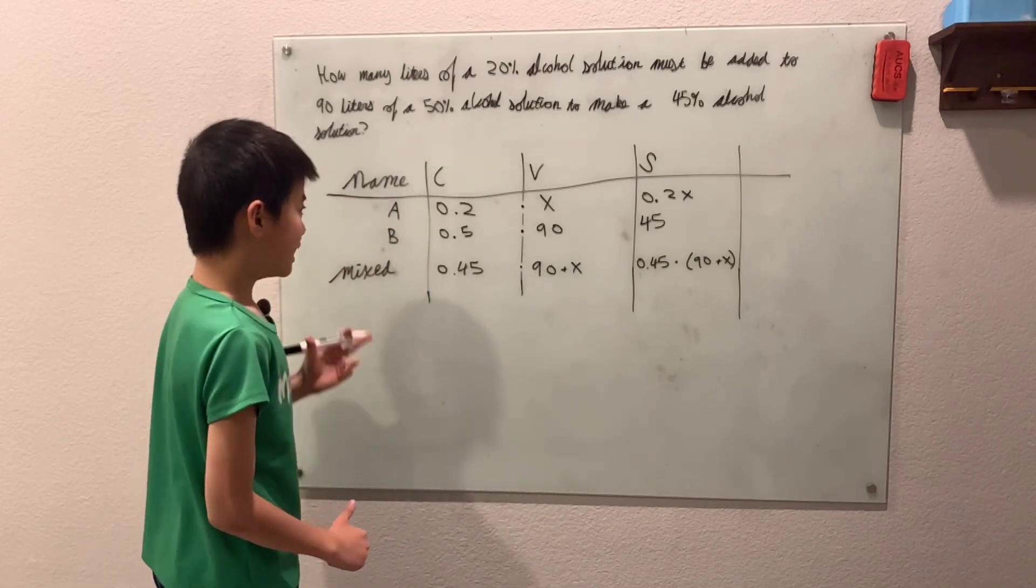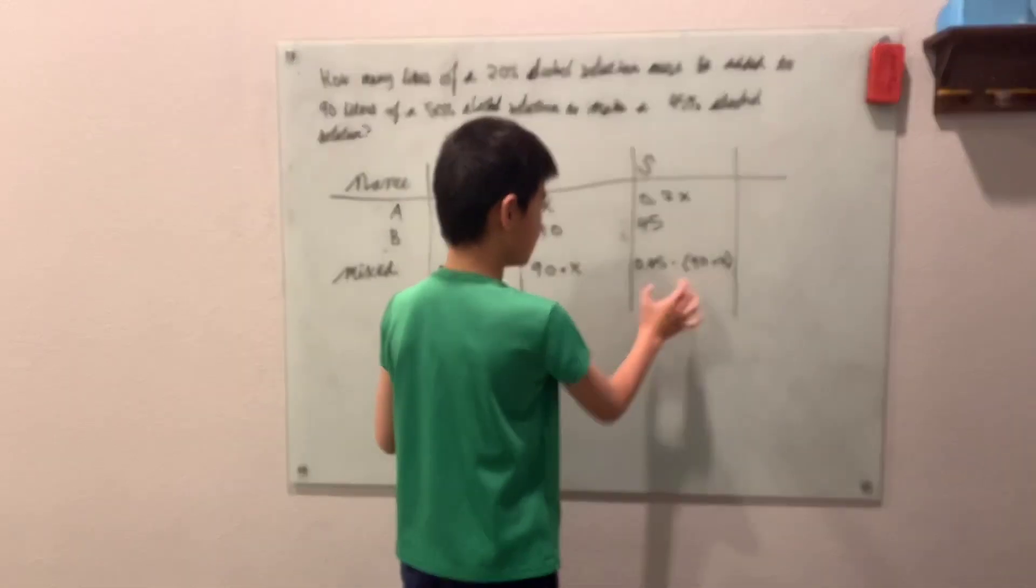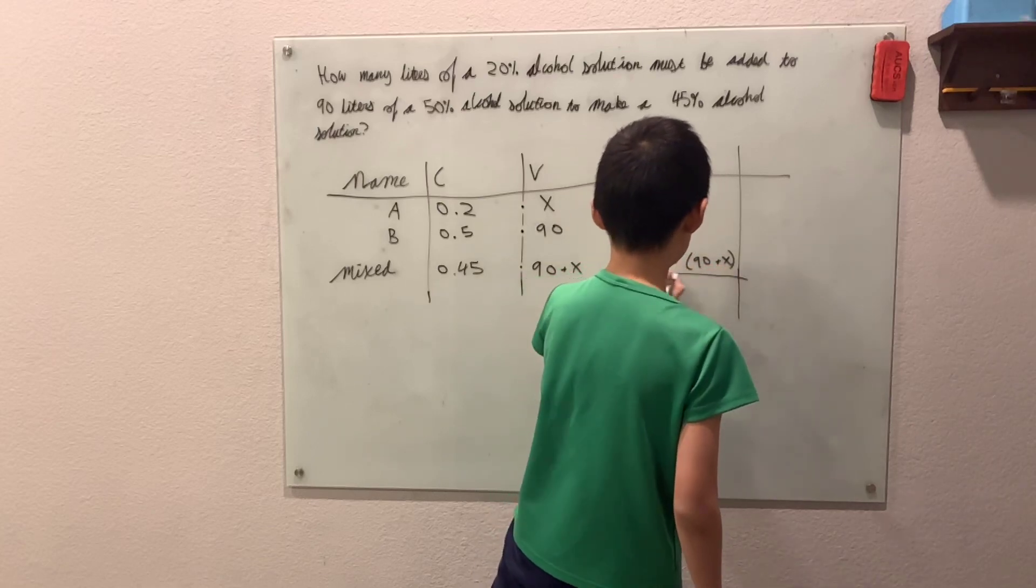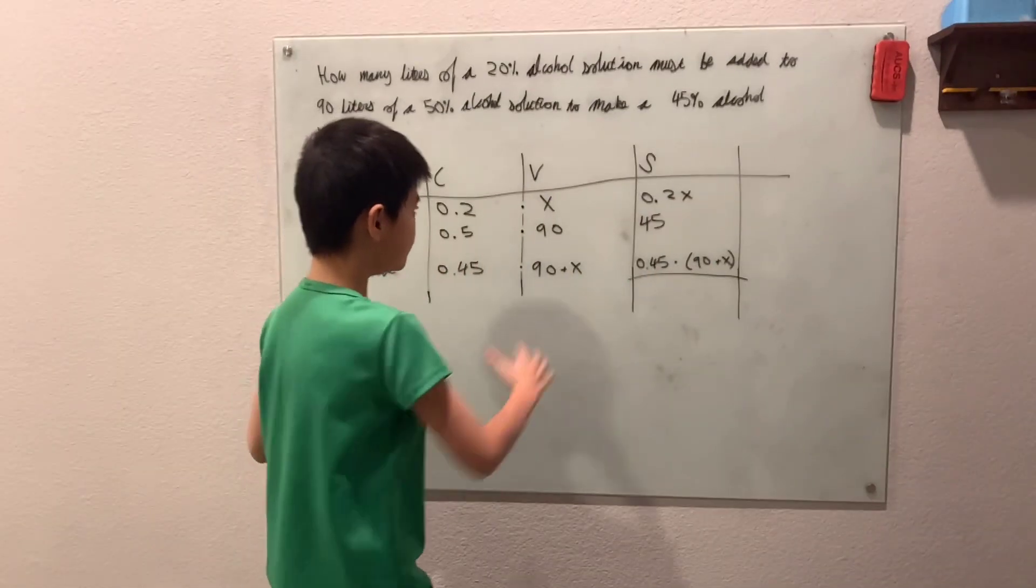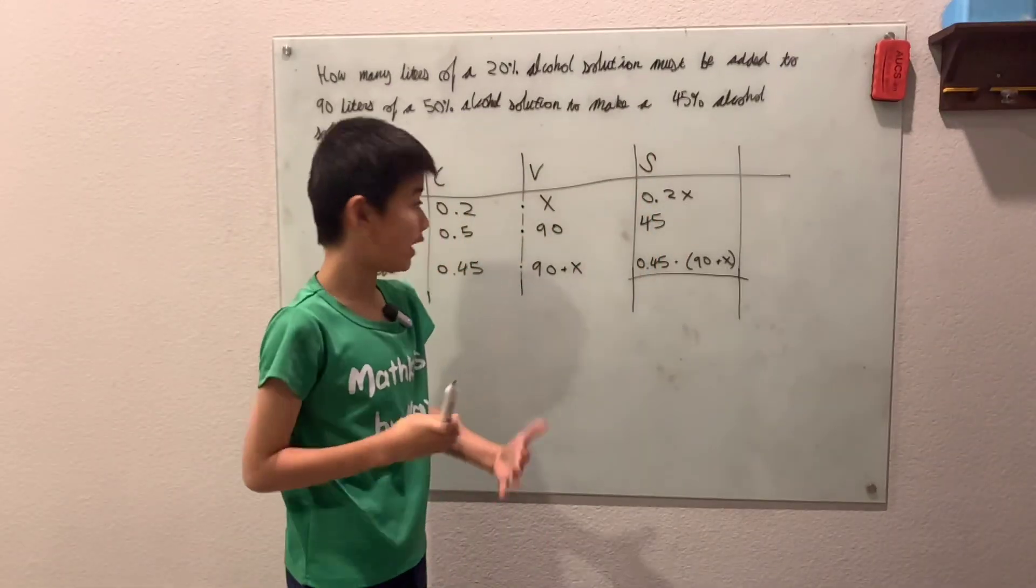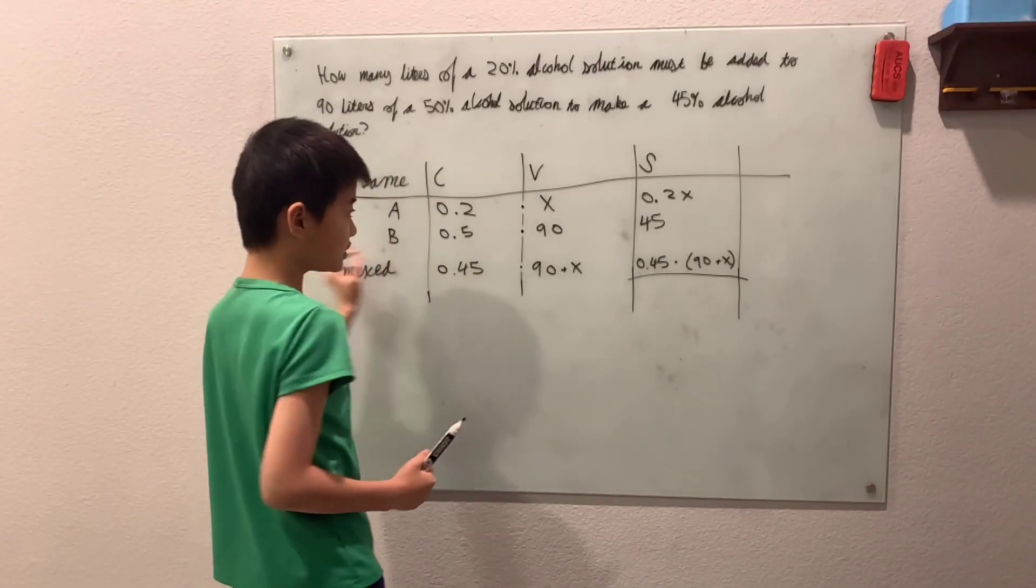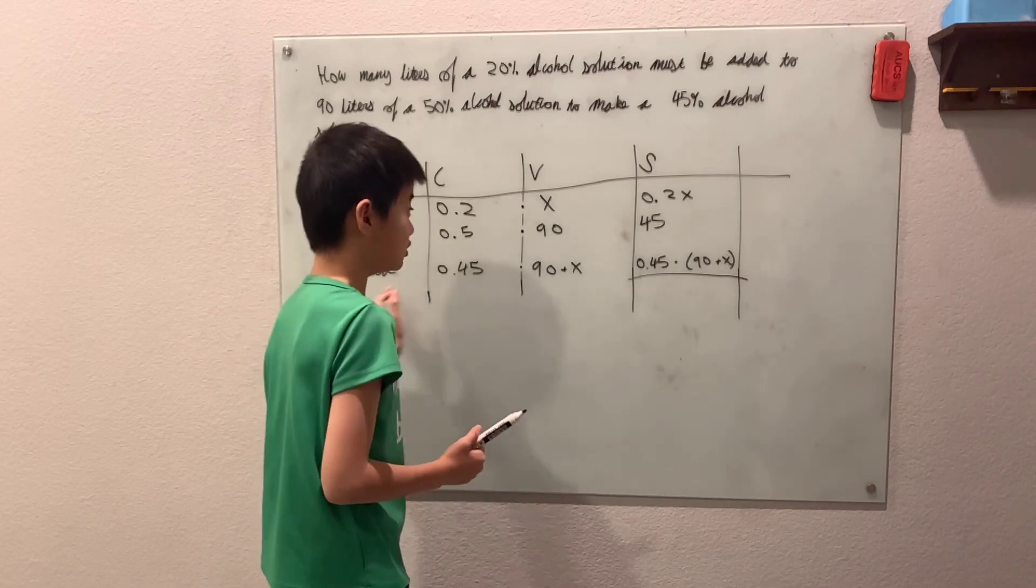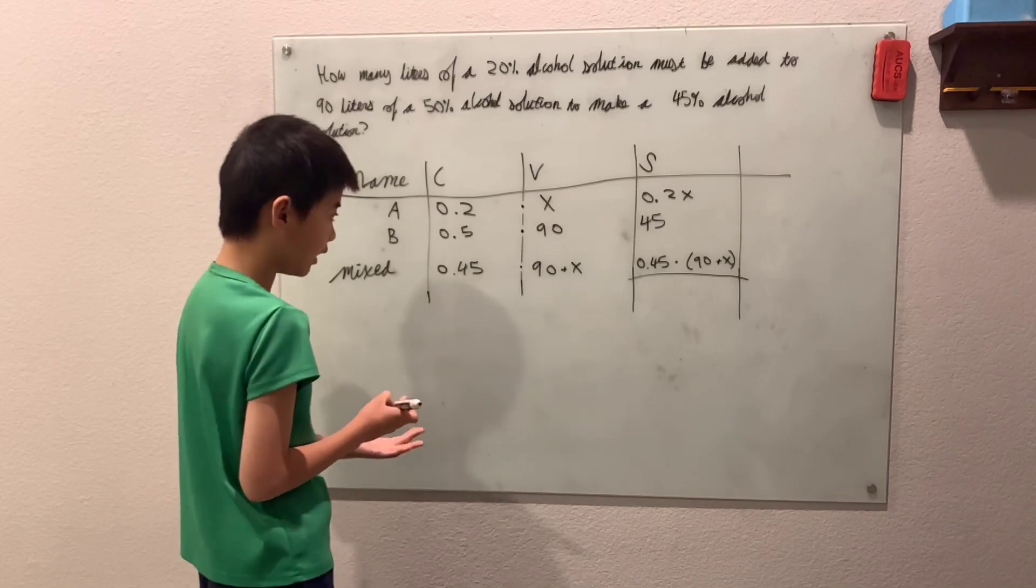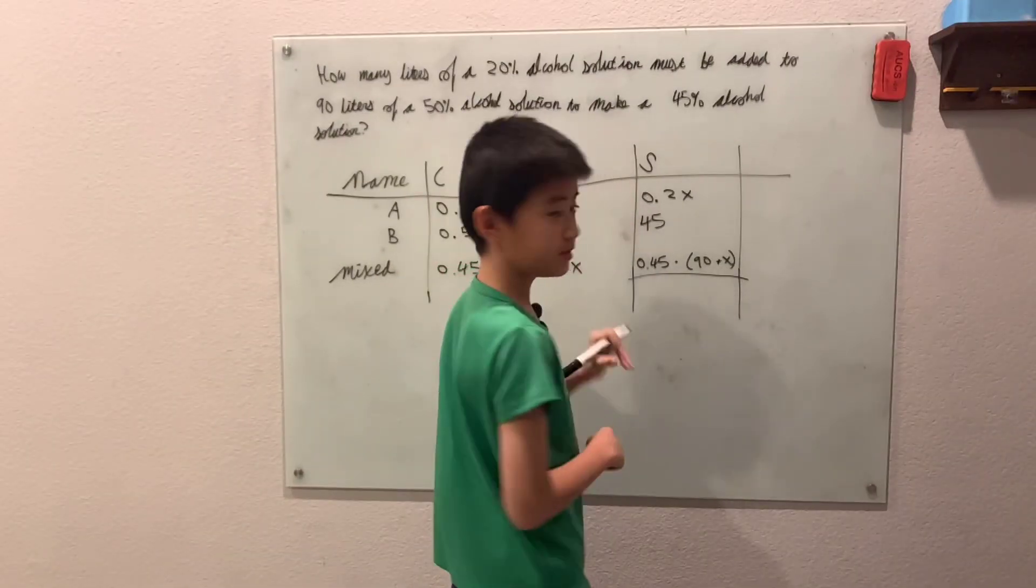So, now how does this big diagram help us? Well, it's really just because now we actually have an equation. Well, this is kind of like the volume, right? We have 0.2X liters of alcohol plus 45 liters of alcohol equals 0.45 times 90 plus X liters of alcohol, right? So, okay, we're just adding two different volumes together.